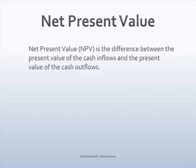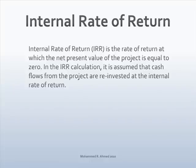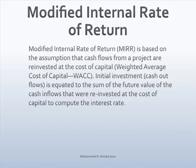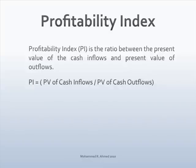Net present value is the difference between the present value of cash inflows and the present value of cash outflows. Internal rate of return is the rate of return at which the net present value of the project is equal to zero. In IRR calculation, it is assumed that cash flows from the project are reinvested at the internal rate of return. Modified internal rate of return is based on the assumption that cash flows from the project are reinvested at the cost of capital, which is the weighted average cost of capital. The initial investment is equated to the sum of the future cash flows reinvested at the cost of capital to compute the interest rate. Profitability index is the ratio between the present value of cash inflows and the present value of cash outflows.